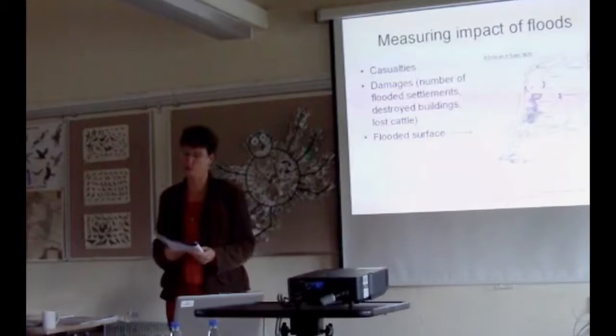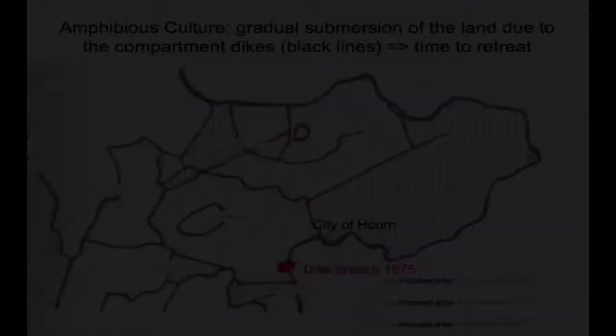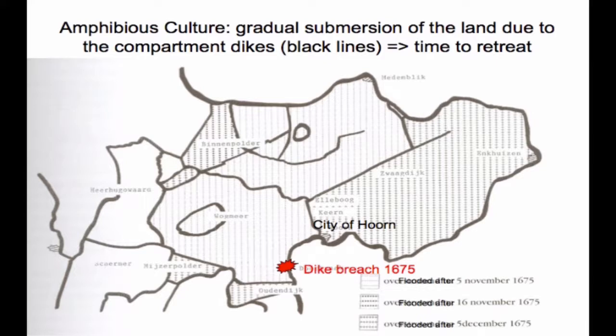I want to go into these landscape features: the elevation of settlements and the water-based transport. First, the amphibious culture as expressed by compartmentalization — it's an awkward word, but it's the closest I found. Here you see a map of a part of Holland called West Frisia in 1675. All these black lines are dikes — interior dikes, two to three metres high. Once flooding occurred, it would occur unit by unit, so people had time to flee.